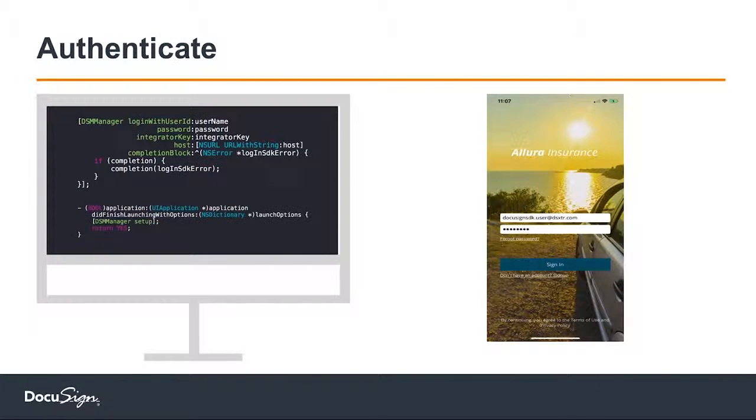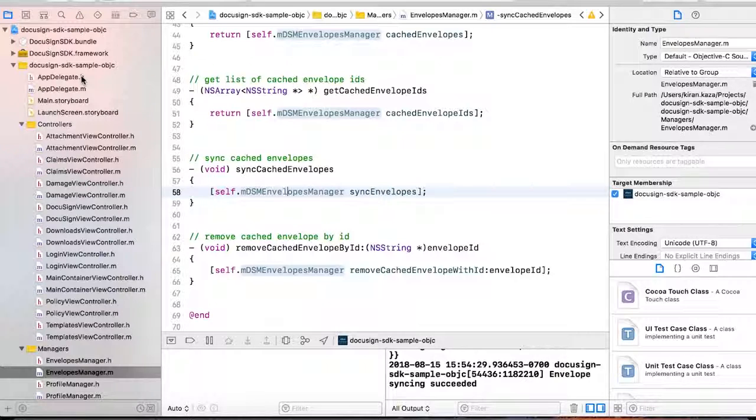Let's understand the first step: authentication. You have your own application and your own authentication model, but you need to authenticate yourself with DocuSign. The code snippet shows we need four data points: the DocuSign user ID, the password, an integrator key — which helps identify who you are with DocuSign — and the host. The host refers to different environments for testing, lower non-production environments, and the production environment. You pass those four values in a single line of code to authenticate with DocuSign. Let's look at that in a real app — an insurance company app.